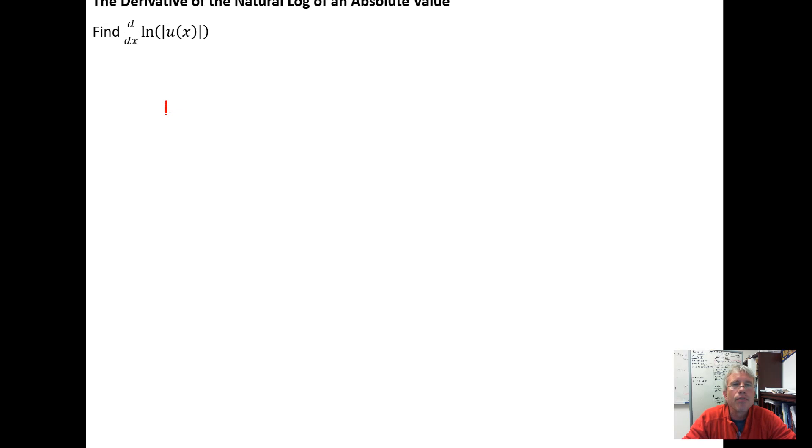So here's the idea. If we have the natural log of the absolute value of some function of x, it can be any function you wish, there are two possibilities.